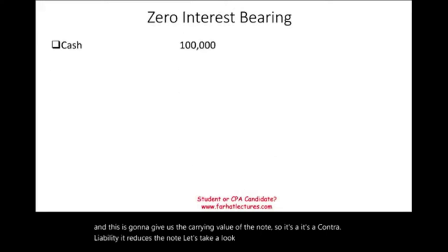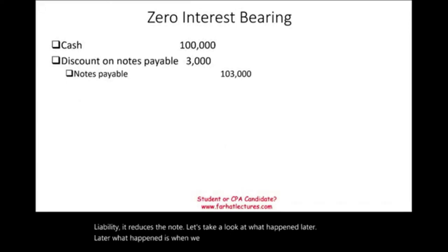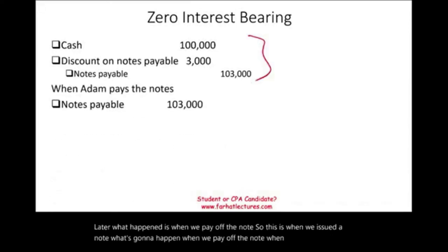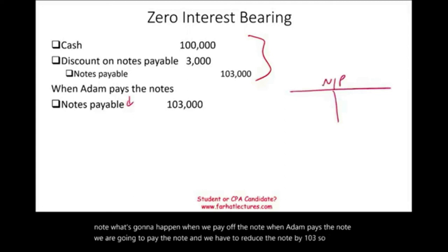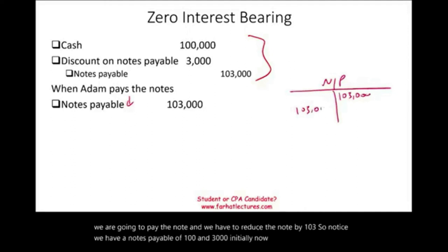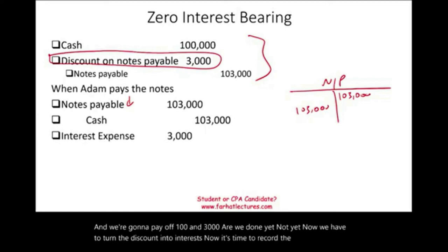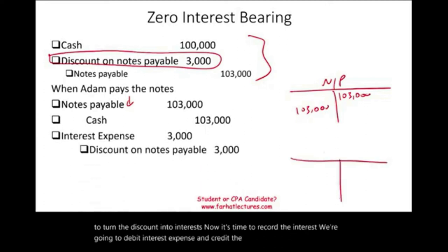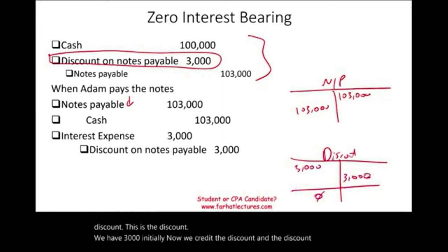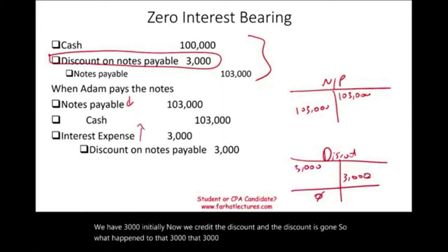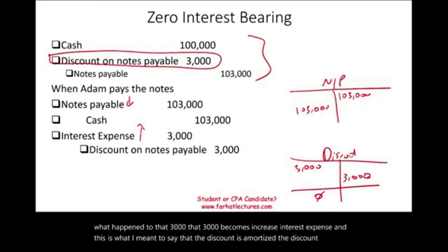When Adam pays off the note, we debit notes payable $103,000 and credit cash $103,000. Then we turn the discount into interest: we debit interest expense $3,000 and credit the discount account $3,000, and the discount is gone. That $3,000 becomes interest expense — this is what it means to amortize the discount; the discount turns into interest expense.